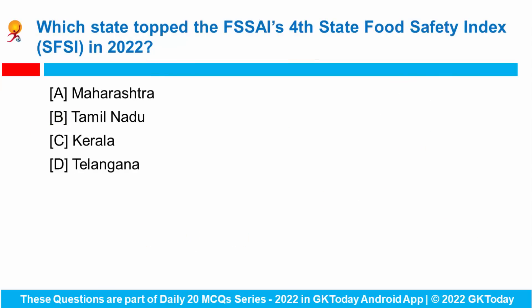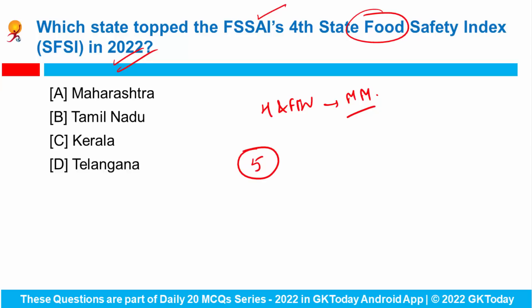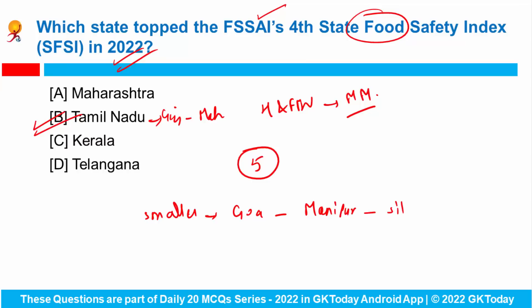Next question: Which state topped the Food Safety and Standards Authority of India's fourth State Food Safety Index in 2022? Union Minister for Health and Family Welfare Mr. Mansukh Mandviya released the FSSAI's fourth State Food Safety Index, which measures states' performance on 5 food safety parameters. Among larger states, Tamil Nadu ranked first, Gujarat second, and Maharashtra third. Among smaller states, Goa ranked first, Manipur second, and a third state. In union territories, Jammu & Kashmir ranked first, Delhi second, and Chandigarh third.